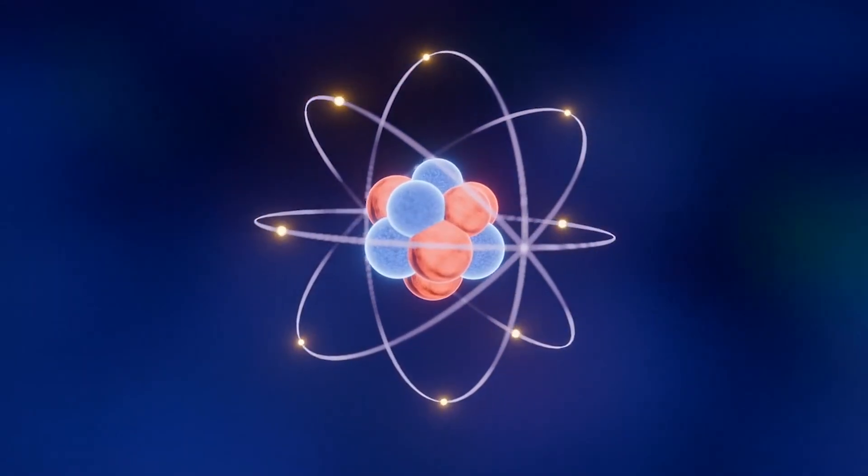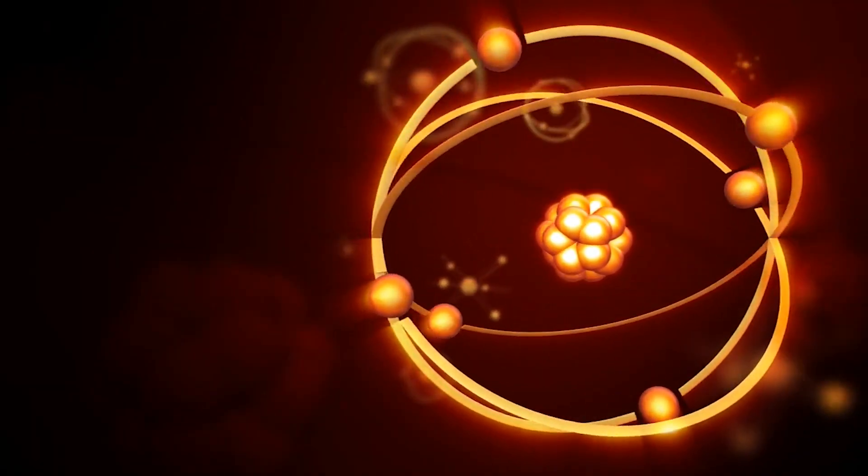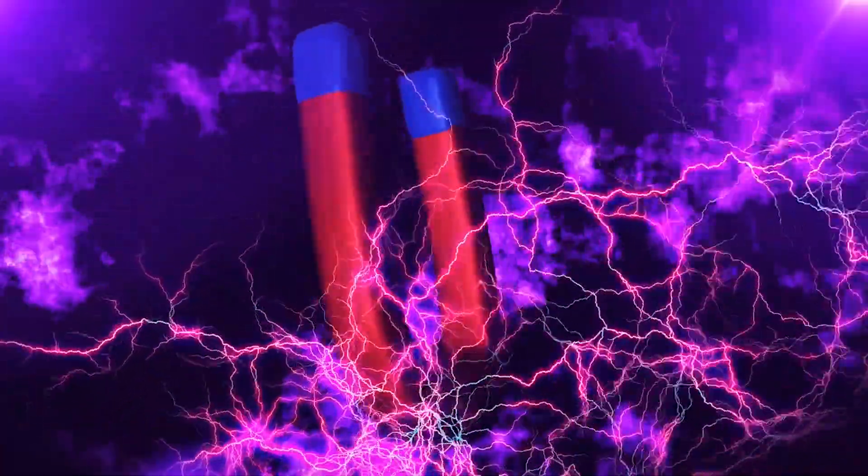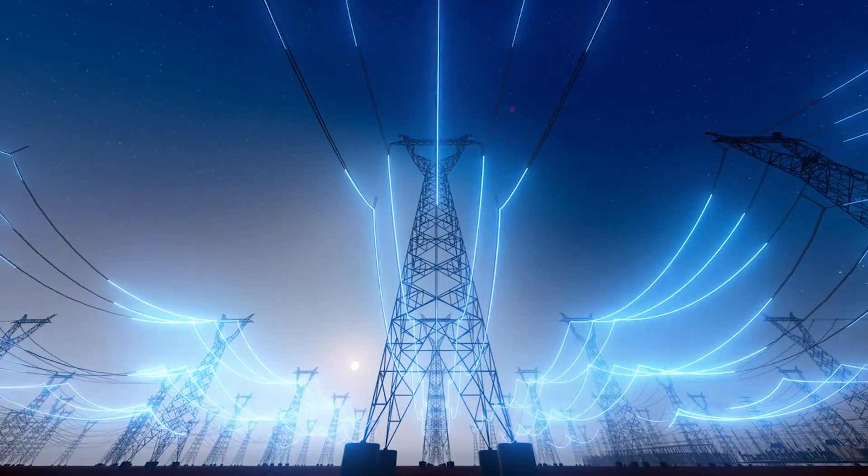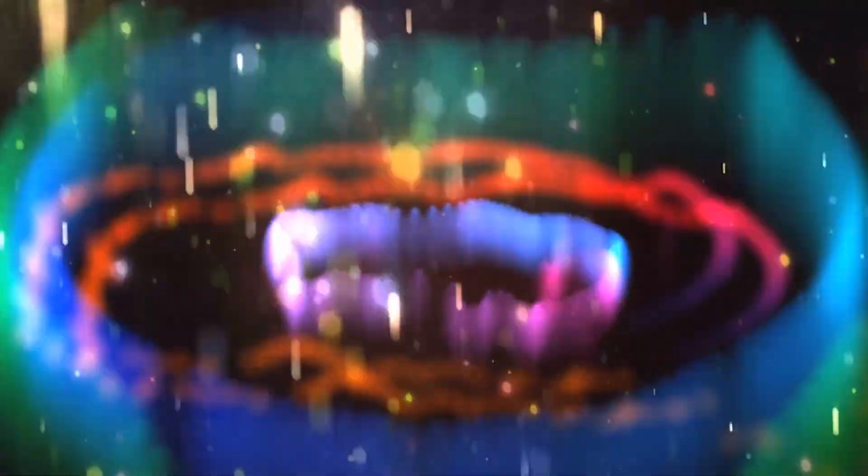Inside each atom, electrons orbit the nucleus in defined energy levels, sometimes called orbitals. When the electromagnetic field from the Tesla coil passes through, it transfers energy to those electrons. The electrons absorb this energy and jump to higher orbitals, entering an excited state.